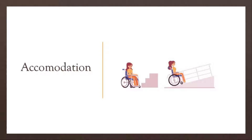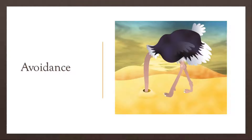First off is accommodation. Accommodation is useful when you value the relationship of the individual in conflict with you — you're willing to give them what they want to keep your relationship intact. I can foresee this style being most useful when talking down someone in crisis, or making them feel safer by promising them things to help them calm down. Accommodation is a lose-win, with you losing. Next up, avoidance. Avoidance is where, in order to prevent or de-escalate conflict, you simply actively avoid it — either leaving the scene or ignoring someone who is provoking you.